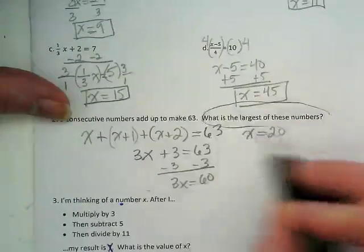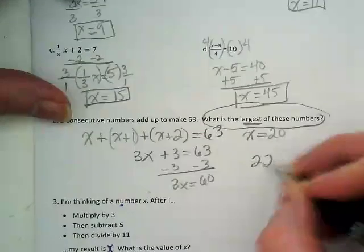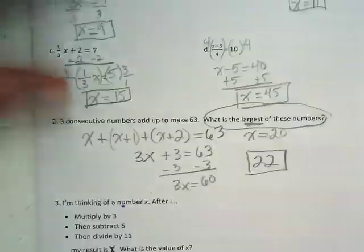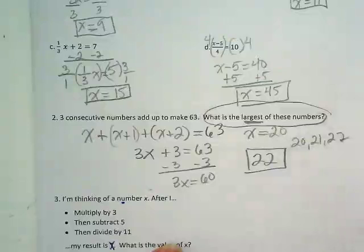But the question asks, which of these is the largest number? And the largest number is x plus 2, so 22 is my answer. The three numbers would be 20, 21, and 22.